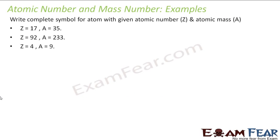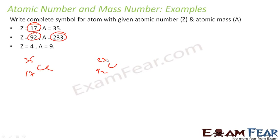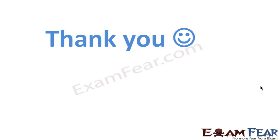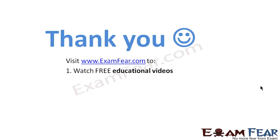Last example on atomic number and atomic mass: define the complete symbol for atoms with given atomic number and atomic mass. Atomic number 17 means it is chlorine (Cl-35). Atomic number 92 with mass 233 is uranium. Atomic number 4 with its atomic mass is beryllium. This question tests whether you know atomic numbers correspond to specific elements.